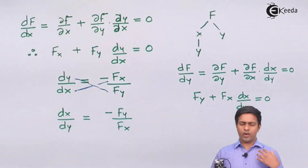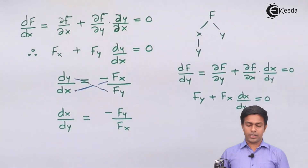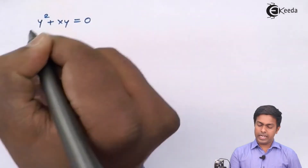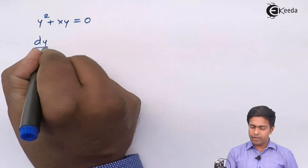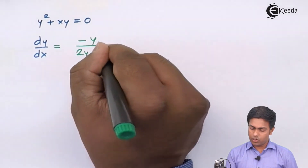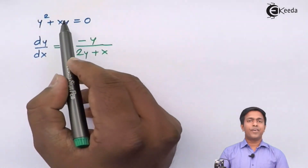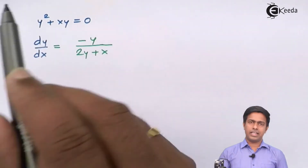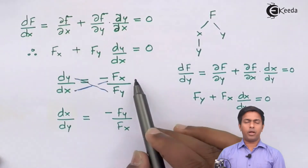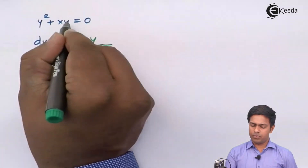Now we have two choices when solving a question: differentiate term by term, or use the direct formula. Let's verify using the earlier example y² + xy = 0. We already found dy/dx = −y/(2y + x) by term-by-term differentiation. Now using the formula: dy/dx = −fx/fy, where f = y² + xy. Let me compute fx and fy.